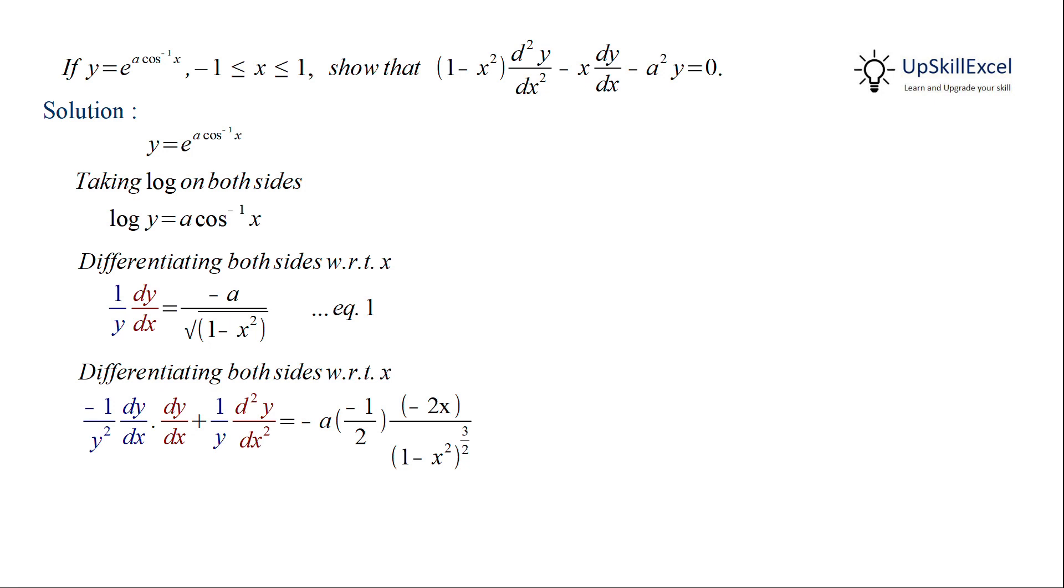Now doing the simplification, we get an equation which is having first and second level derivatives. Compare this with the equation that we have to prove. The first term is dy by dx whole square, whereas the equation that we have to prove doesn't have this term.